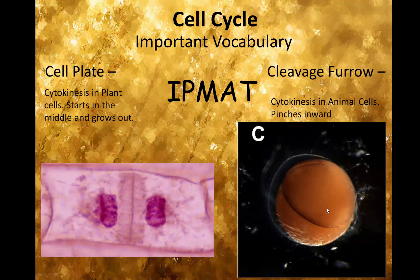Here's another one — this was a frog — and it's actually gone through a second division, so we're going to create four cells: these two and the two on the far side. But those are the cleavage furrows.